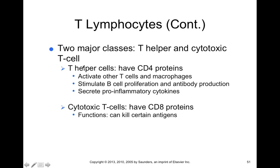Think of T helper cells as the cheerleaders of the immune response — they don't participate directly in fighting infection. Rather, they release cytokines when they recognize infection or tissue damage, which activate other immune cells like cytotoxic T cells and B cells.